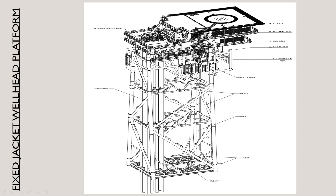There is the boat landing. Then there is the LAT — Lowest Astronomical Tide — which is considered as the zero level, the reference water level. From here onward we determine how high or how low any deck or jacket point is. Any elevation above the LAT is positive, and below it is negative. You can see the cellar deck, main deck, mezzanine deck, and heli deck.